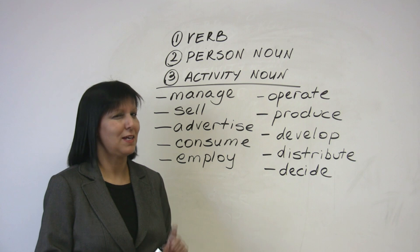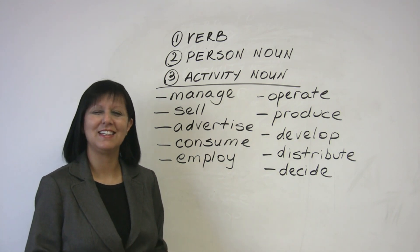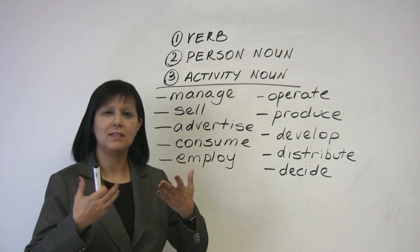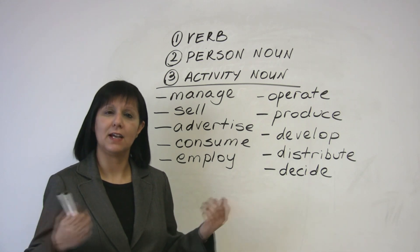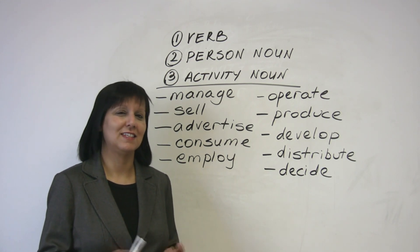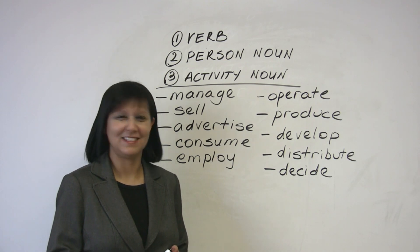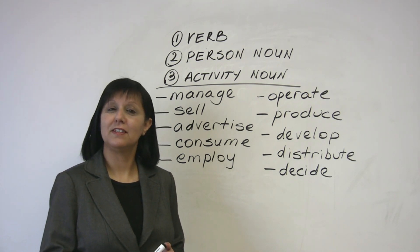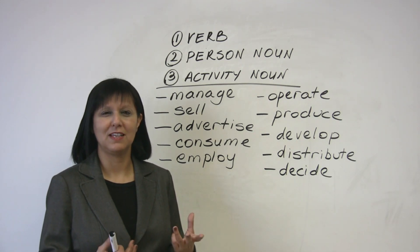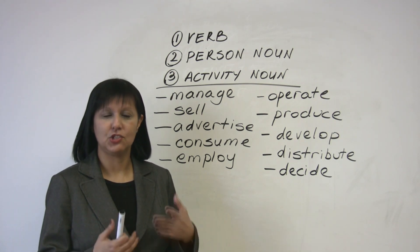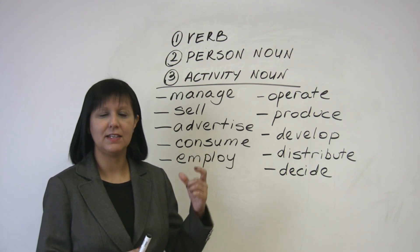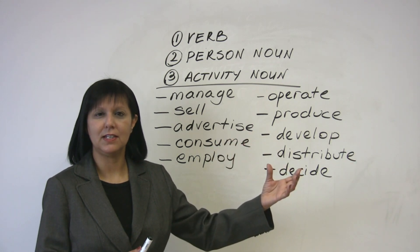The last one I put here just to trick you a little bit and make you think. Decide is the verb. What's the person? What's the noun for the person who decides? The person who decides is not called the decider — that person is called the decision maker. In English, that's all we have. We don't have any one word for the person who decides; we just say decision maker. She's the decision maker. He's the decision maker. So, decide. Decision maker. And the activity noun: decision.